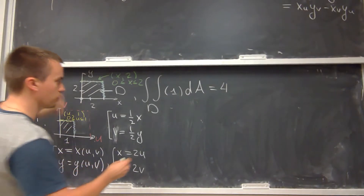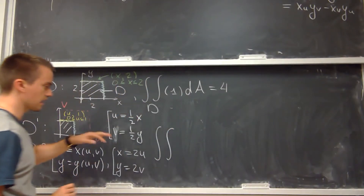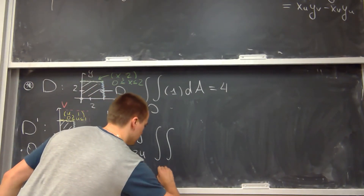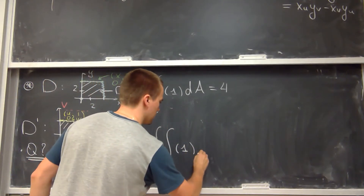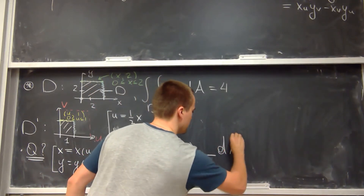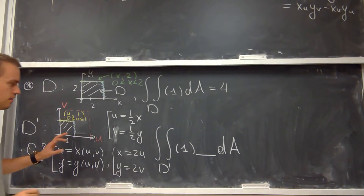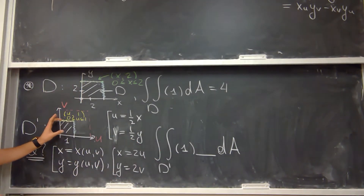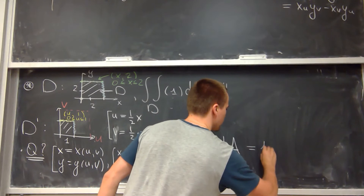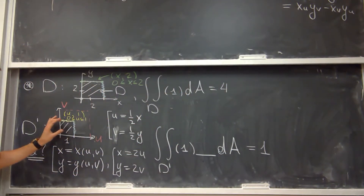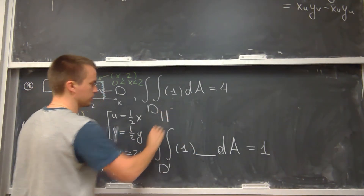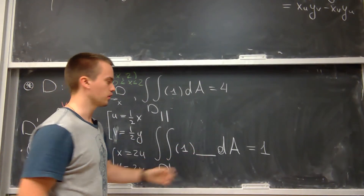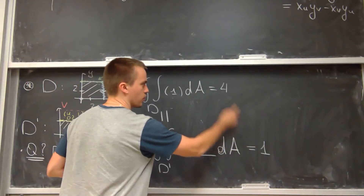According to our formula, let's set up the integral in terms of the new variables. The new integral is a double integral over D-prime; my function is constant so it doesn't change. I multiply by the Jacobian and dA. Without the Jacobian, the area of this unit square is 1, so the integral would equal 1. Since we need both integrals to be equal to 4, we need the Jacobian as a correction factor to make sure the two answers are the same.